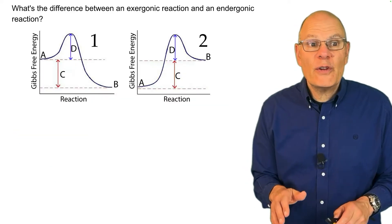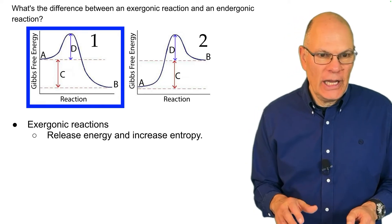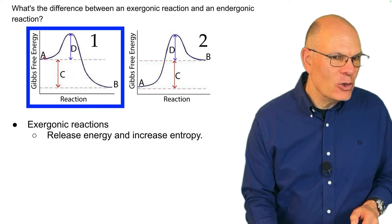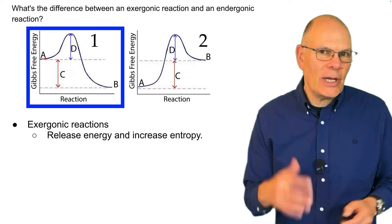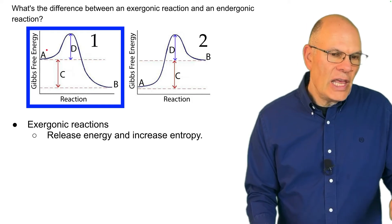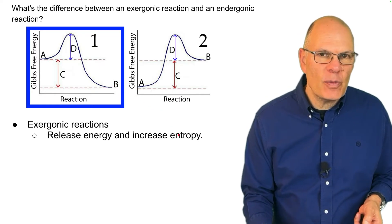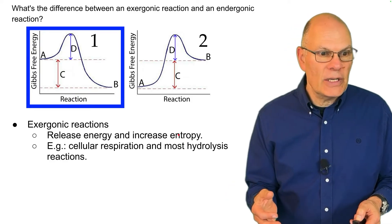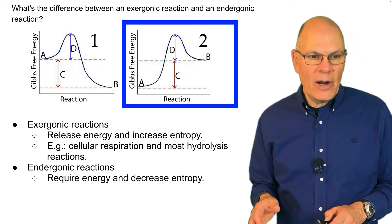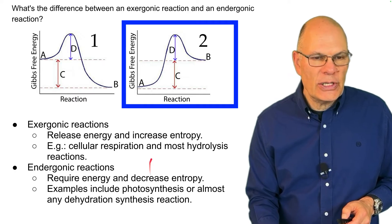What's the difference between an exergonic reaction and an endergonic reaction? Exergonic reactions release energy and increase entropy — the energy of the reactants is greater than the energy of the products. For example, burning paper starts with cellulose and produces many unorganized atoms of carbon dioxide and water, increasing entropy by decreasing organization. Cellular respiration and most hydrolysis reactions are exergonic. Endergonic reactions require energy and decrease entropy; examples include photosynthesis and almost any dehydration synthesis reaction.